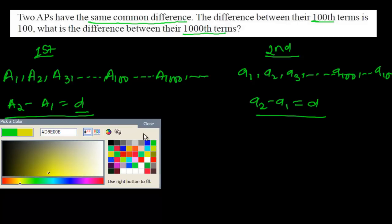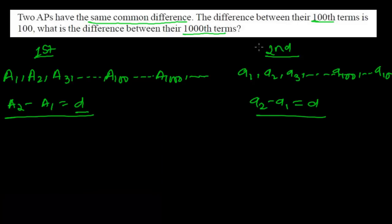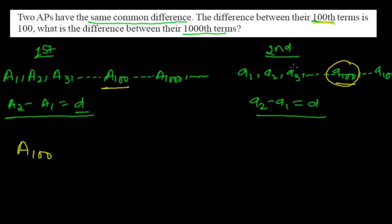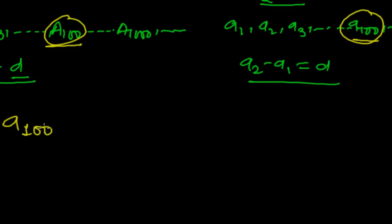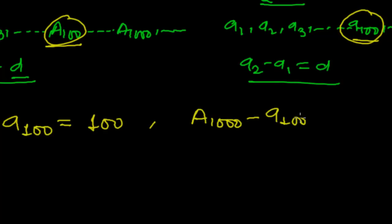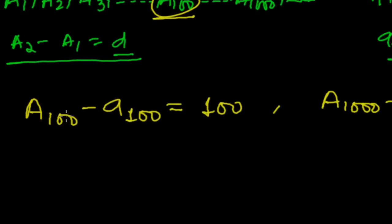The question tells us the difference of their hundredth terms equals 100. We need to find the difference between the thousandth terms. How do we find this?